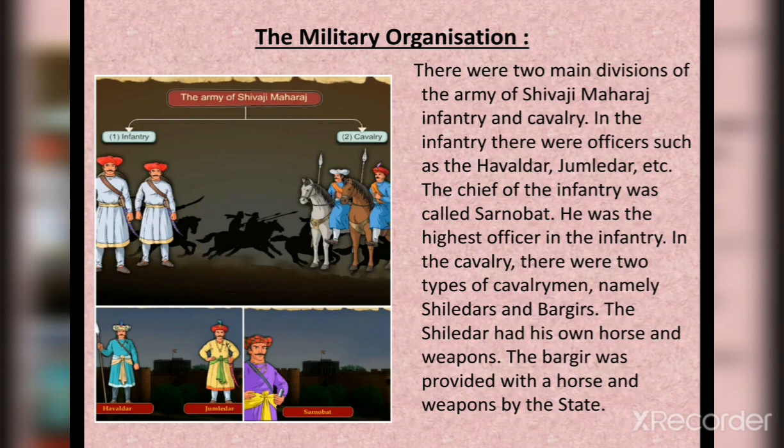The military organization: there were two main divisions of the army of Shivaji Maharaj — infantry and cavalry. Infantry means soldiers who fought on foot; cavalry means soldiers who fought on horseback. In the infantry there were officers such as the Havaldar, Jumledar, etc. The chief of the infantry was called Sarnobat, the highest officer in the infantry.